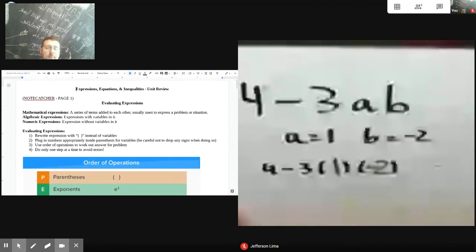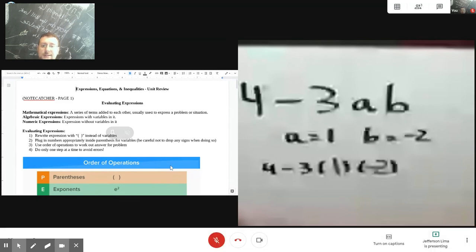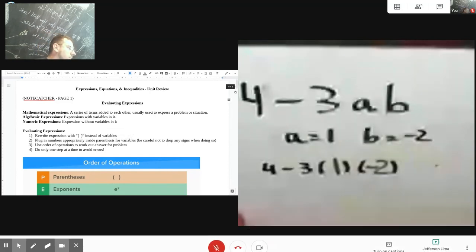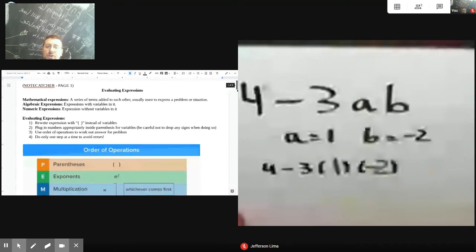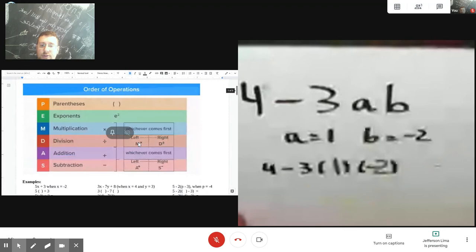So now we can actually—I'm going to change the color of this writing so it's more visible. Now, the next step is to actually evaluate the expression one step at a time with orders of operation. Remember the thing about orders of operation is that multiplication and division are actually tied. They don't have preference over the other.